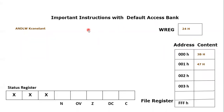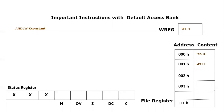Bismillahirrahmanirrahim. Assalamu alaikum everyone. Today we are going to conduct another tutorial of the PIC18F instruction set. In this tutorial we will understand another new instruction which is ANDLW — AND Literal to Working. ANDLW is an instruction used to perform the logical AND operation between the working register and the literal value provided inside the instruction. The constant K is the literal value we provide when writing the instruction.